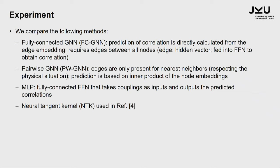We compare the following methods, though I'm mainly interested in showing the difference between the first two. One is a fully connected graph neural network where the prediction of the correlation is directly calculated from the edge embedding. We have a graph with 20 nodes, every node corresponding to a spin, but we want to predict the correlation between nodes that are not nearest neighbors — for instance between spin five and ten. So we need to have an edge in the graph where we can learn the correlation, meaning everybody is connected with everybody. In the edge, you learn a hidden vector fed into a feed-forward network to obtain the correlation.